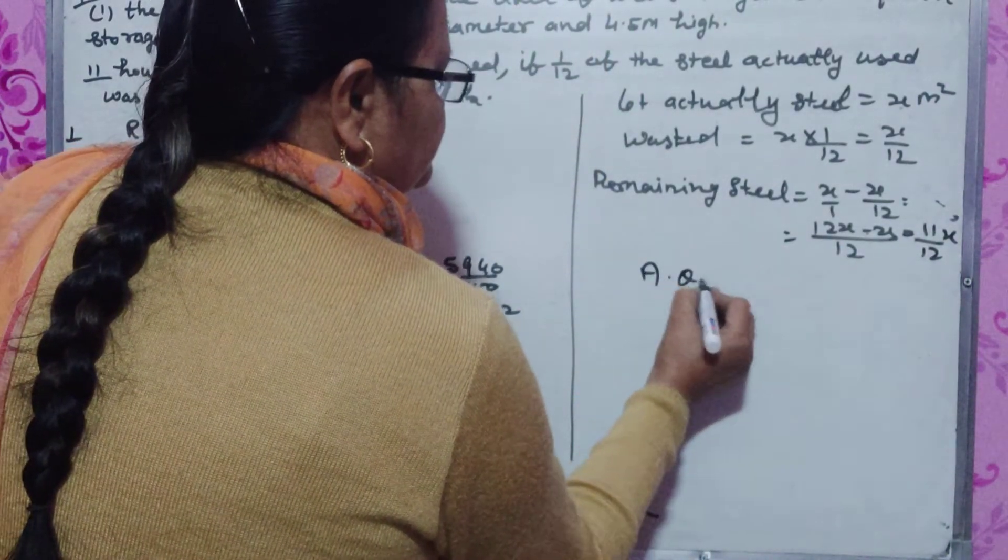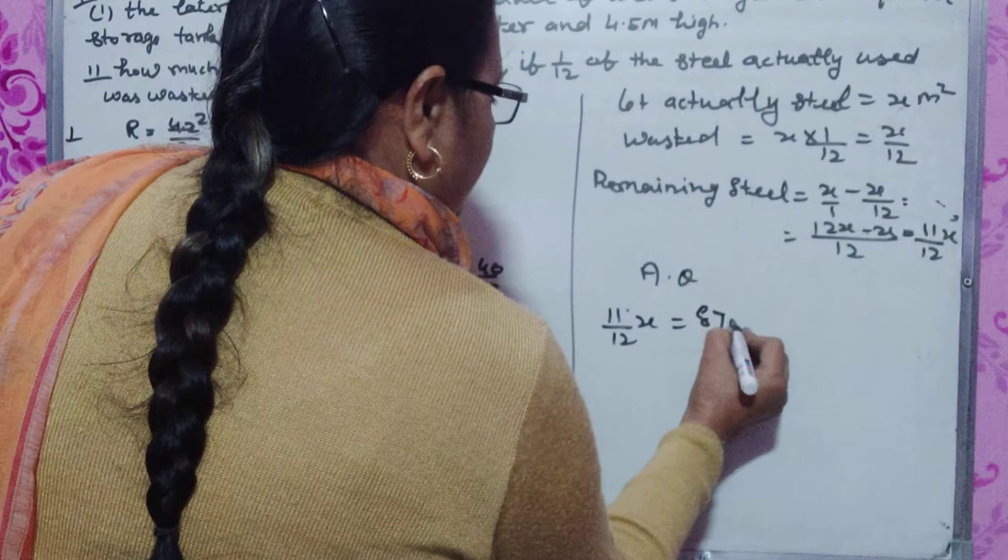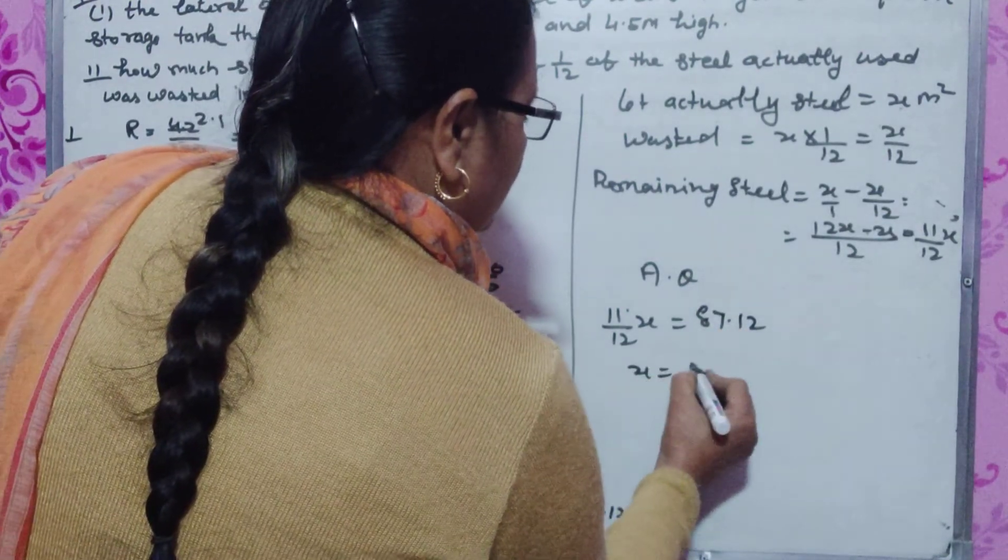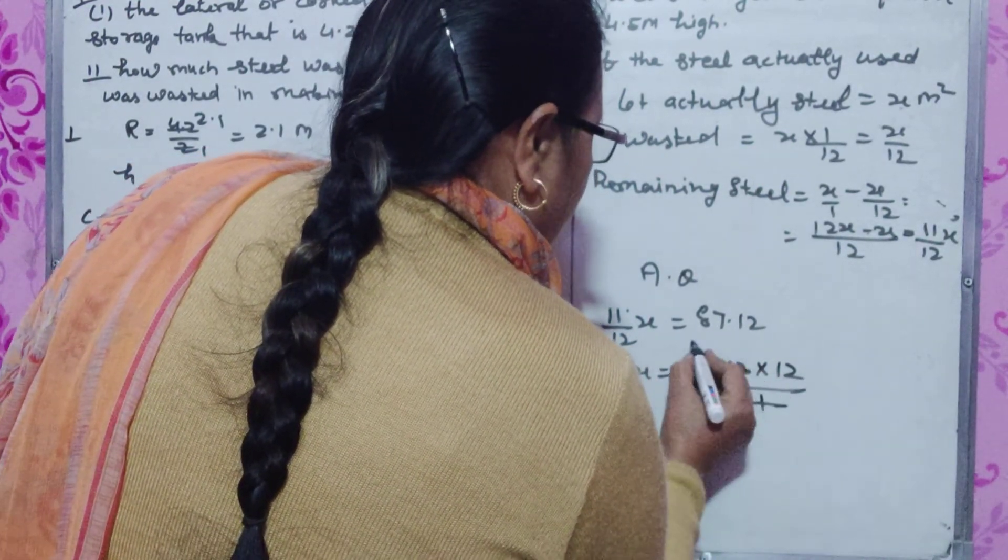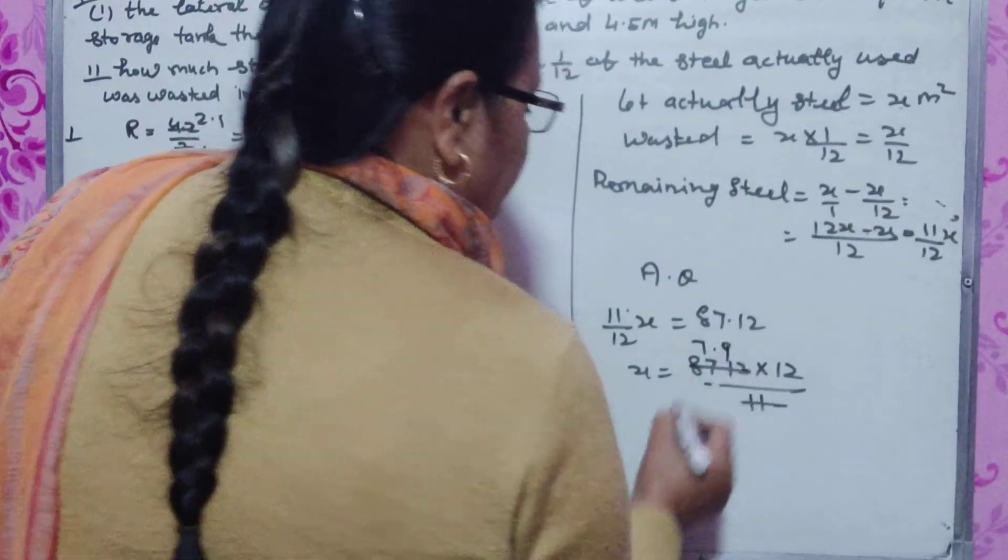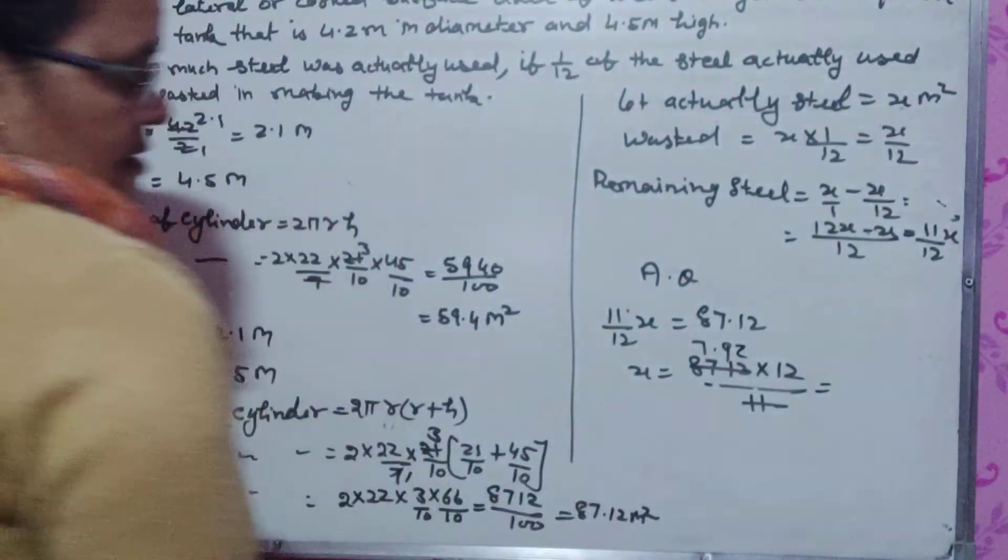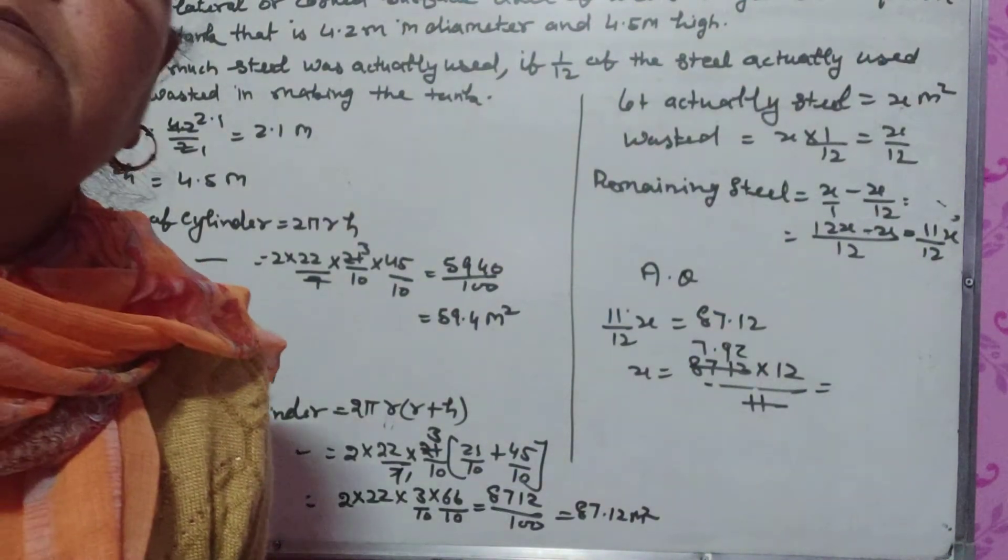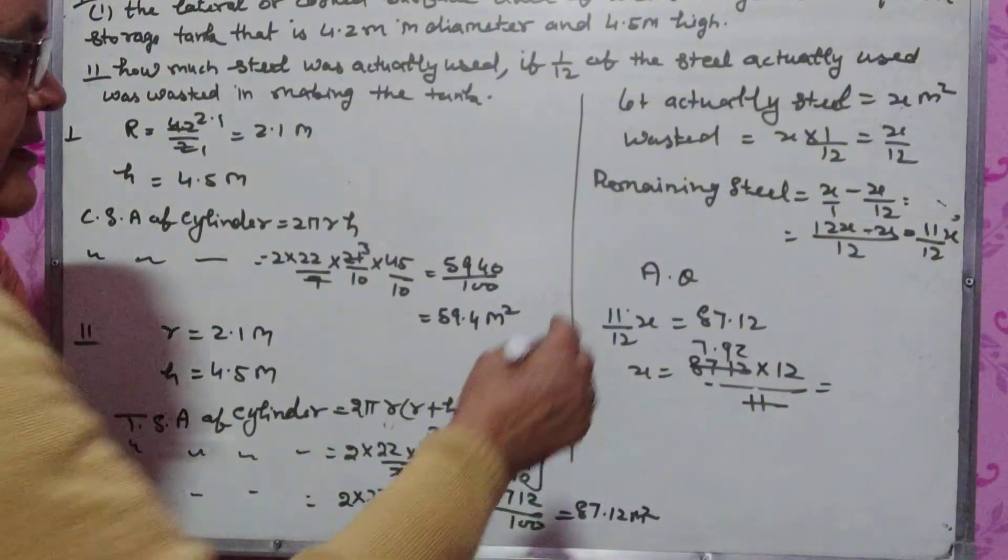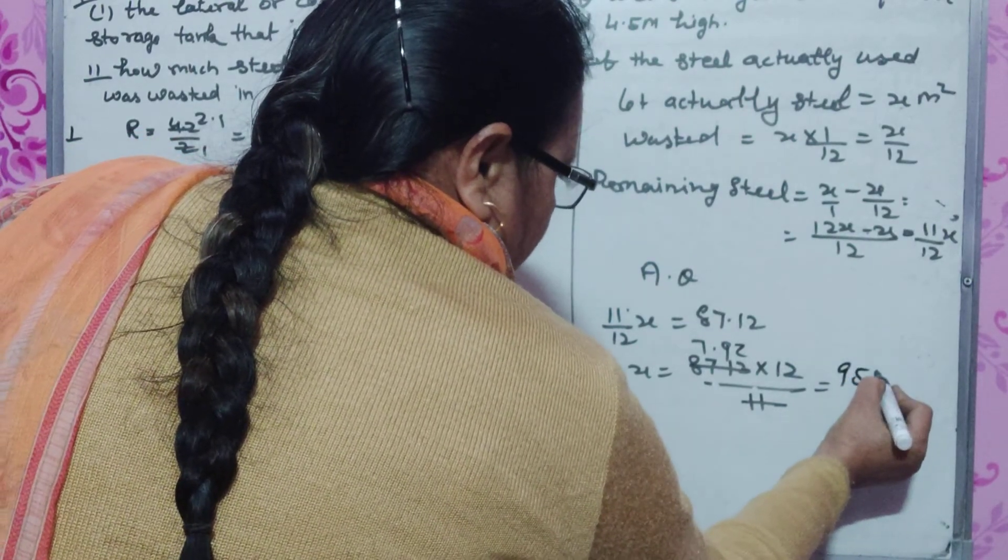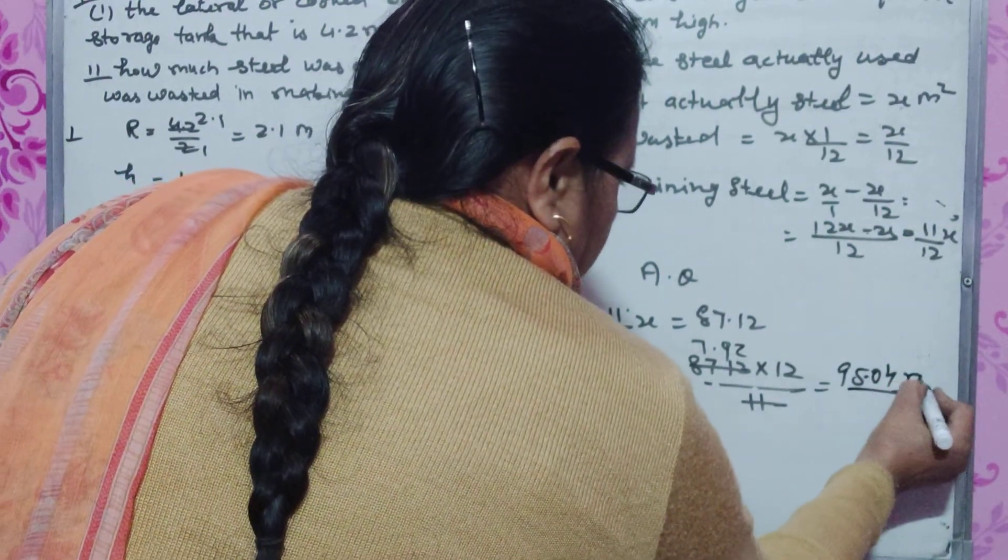According to the question, 11 by 12 x equals 87.12. Therefore x equals 87.12 times 12 by 11, which gives us 95.04 meter square.